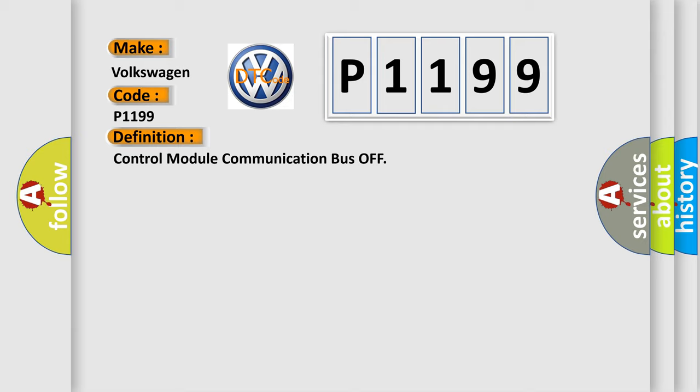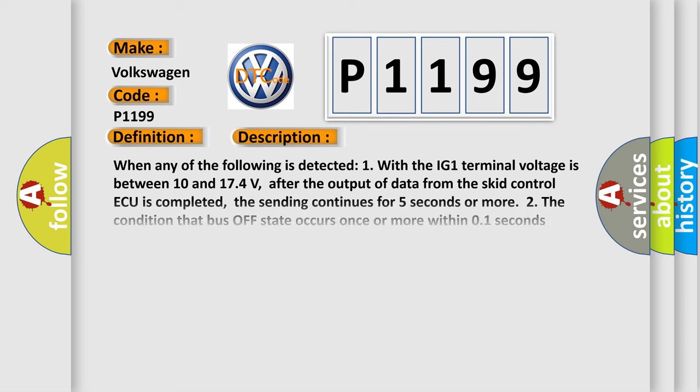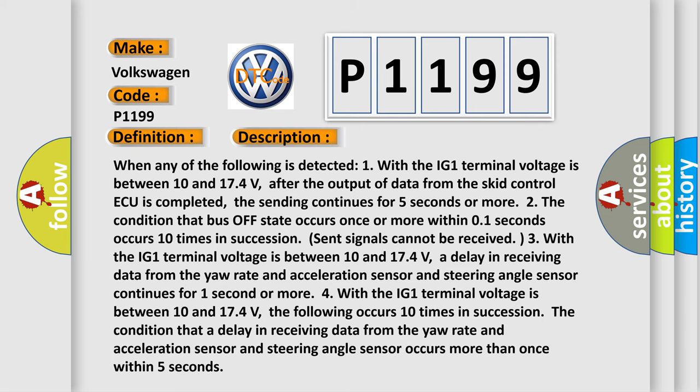And now this is a short description of this DTC code. When any of the following is detected: One, with the IG1 terminal voltage is between 10 and 17.4 volts, after the output of data from the SCID control ECU is completed, the sending continues for five seconds or more.